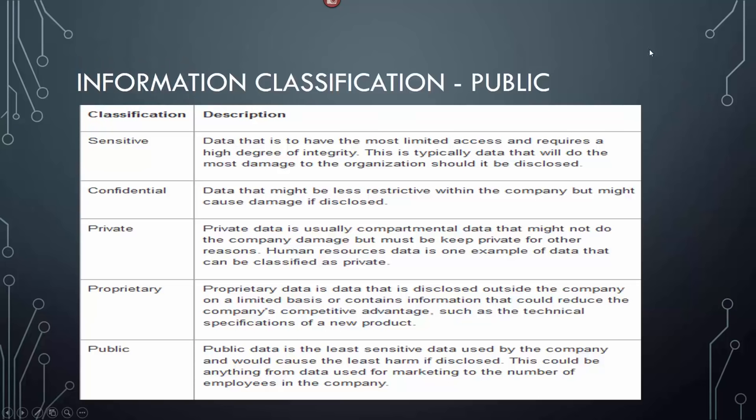There are two areas of information classification — public and government. For public classification: sensitive data has not limited access and requires a high degree of integrity and would do the most damage if disclosed. Confidential data might cause damage if disclosed. Private data is usually departmental — like HR salary information. Proprietary data could reduce the company's competitive advantage, such as technical specs of a new product. Public data would cause the least harm if disclosed, like marketing data.